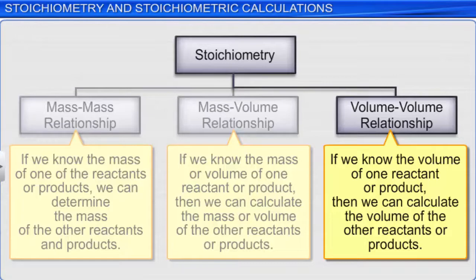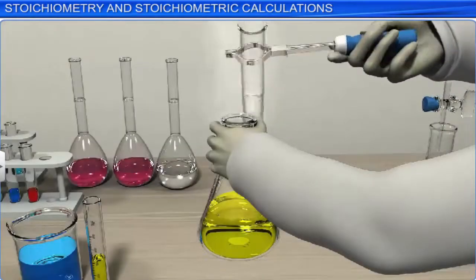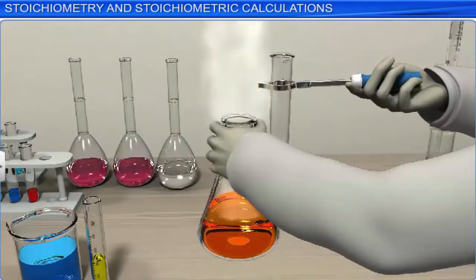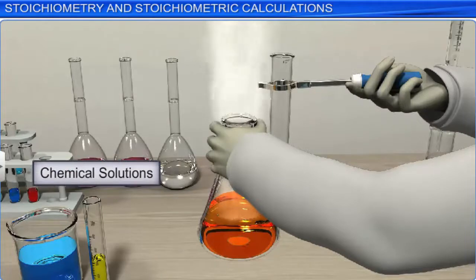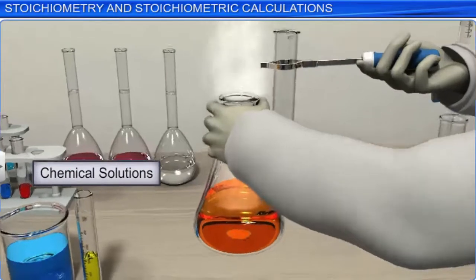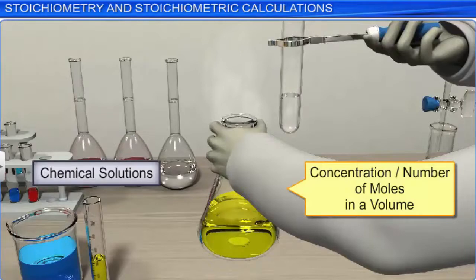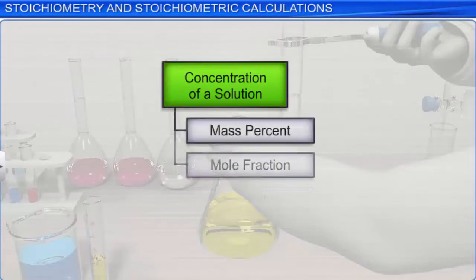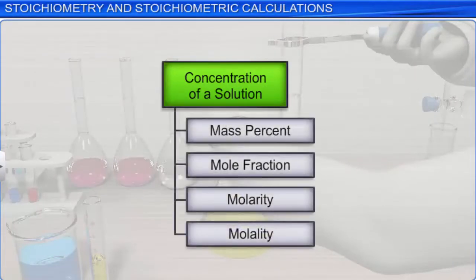Most chemical reactions take place in solutions. Hence, we need to understand how to apply stoichiometry to reactions in solutions. For solutions, we need to know the concentration — that is, the number of moles present in a certain volume of solution. We can express the concentration of a solution through four methods: mass percent, mole fraction, molarity and molality.